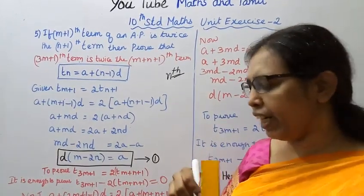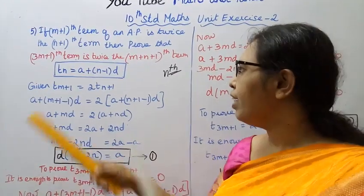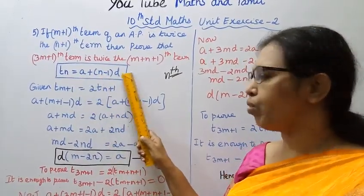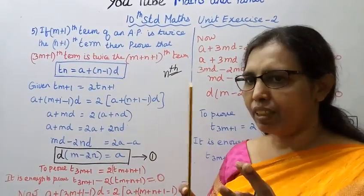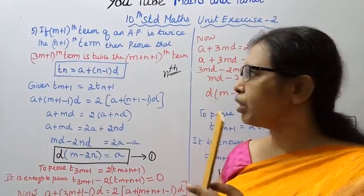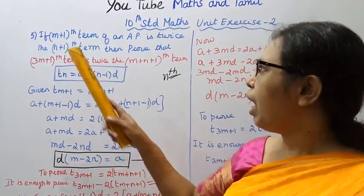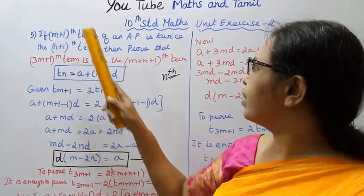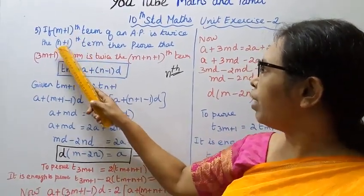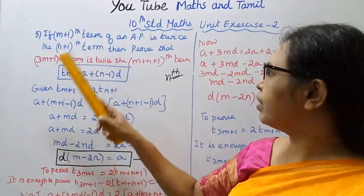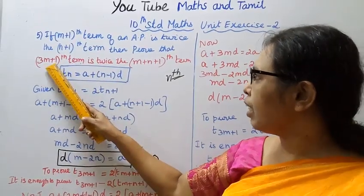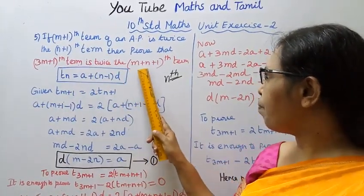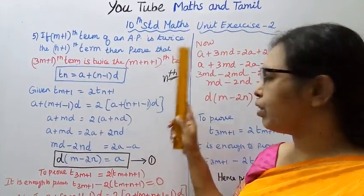Using the formula T(N) = A plus N minus 1 into D for an arithmetic progression, we will find the M plus 1th term, N plus 1th term, 3M plus 1th term, and M plus N plus 1th term.